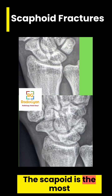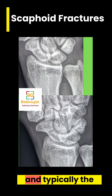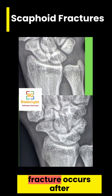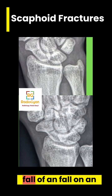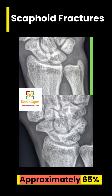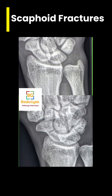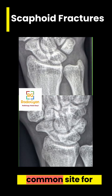The scaphoid is the most commonly fractured carpal bone and typically the fracture occurs after a fall on an outstretched hand. Approximately 65% of fractures are at the waist, making it the most common site for fracture.